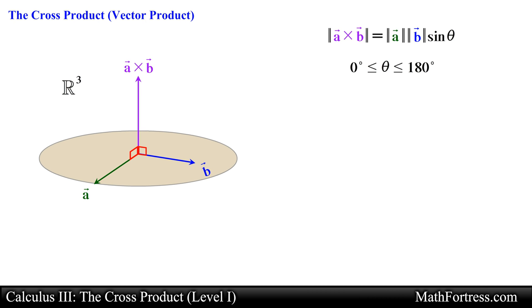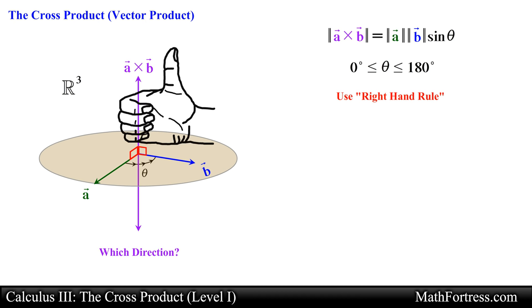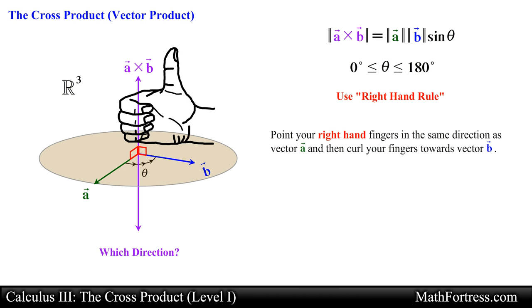When theta is an acute or obtuse angle, the magnitude of the cross product between vector a and vector b will be a fraction or percentage of the maximum magnitude. Now let's talk about the direction of the vector produced by the cross product. There are always two directions perpendicular to a given plane, one on each side. By convention we use the right-hand rule: if we are trying to find vector a crossed with vector b, we can determine the direction of the new vector by pointing your right-hand fingers in the same direction as vector a and then curling your fingers towards vector b.